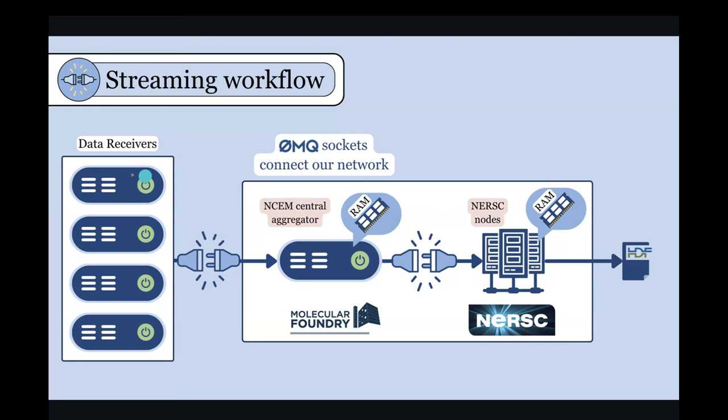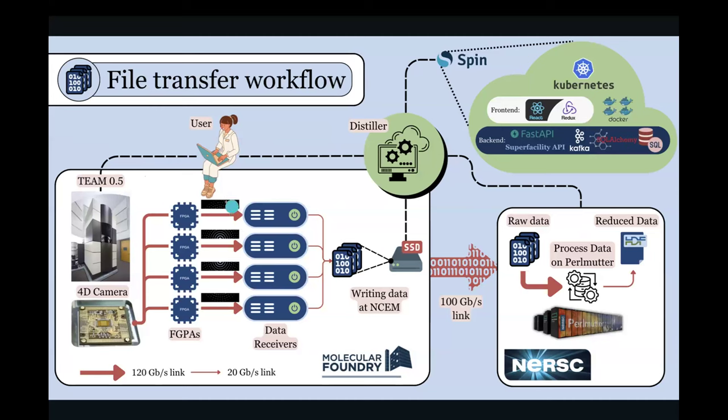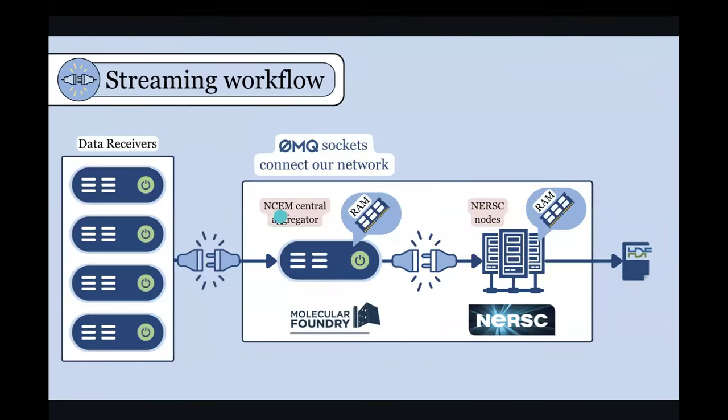And so what does this fanning out process look like? The data receivers, as you will remember, these receivers are each receiving a single sector of a frame. So all of these make up one image that we need to analyze, but we need to figure out a way to get all four of those sectors to a very particular node for that data processing to happen. So this centralized aggregator says, okay, I know that this frame, this sector belongs on this node. And so it sends it to the correct location. And then finally, these consumer processes at NERSC, they're pulling in this data and finally writing to an HDF5 file.